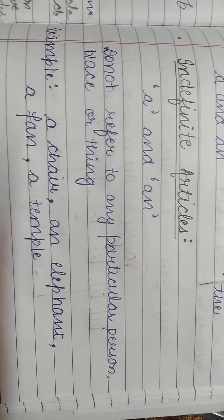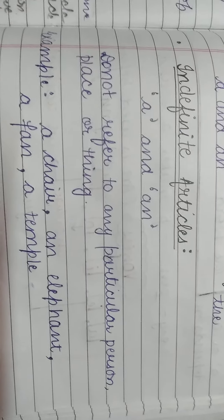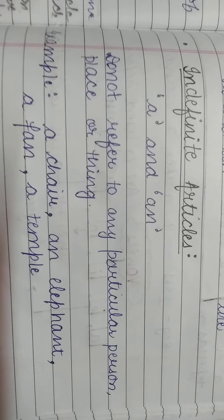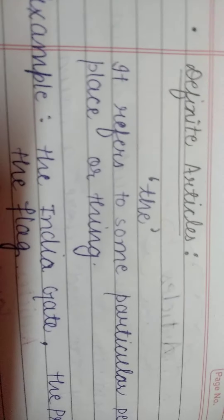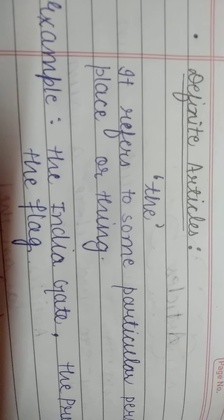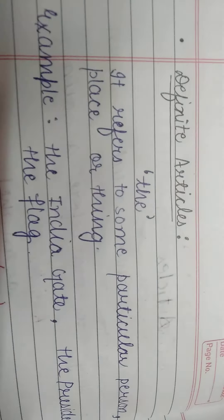What we cover in indefinite articles? A and An don't refer to any particular person, place or thing. If any particular person, place or thing, we don't use A and An. Example: a chair, an elephant, a fan, a temple. It is indefinite, that's why we count it in indefinite articles.